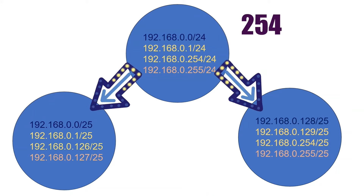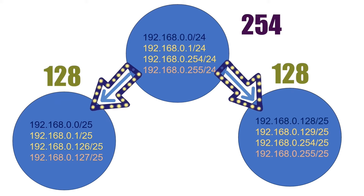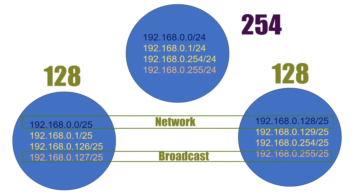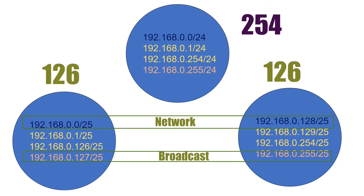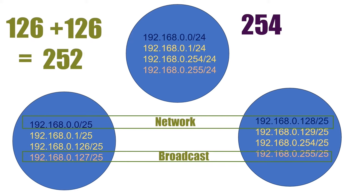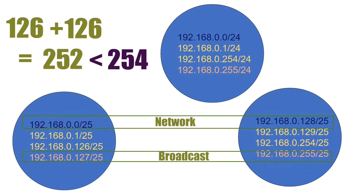If we break this network into two subnets, each subnet will get 128 IP addresses. Both subnets will reserve two addresses — one for the network address and another for the broadcast address. After excluding these addresses, we get 126 usable addresses in each subnet. If we sum the usable addresses of both subnets, we get fewer usable addresses than the original subnet.